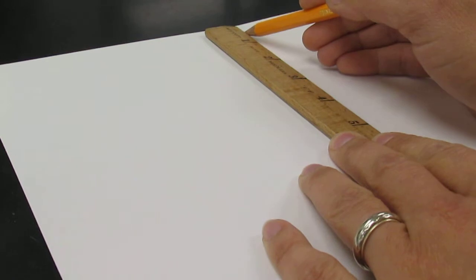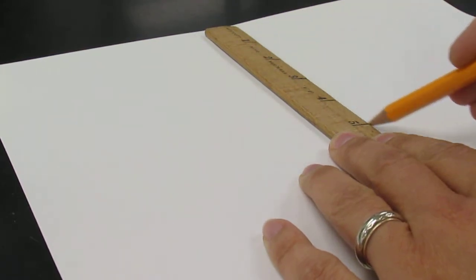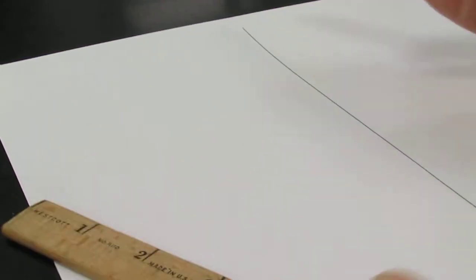So what I'm going to do is take my ruler and split my paper in half with a line. This line should not touch the top of the paper and should also not touch the bottom of the paper.